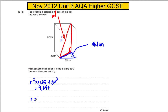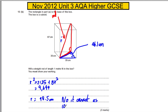The length of the rod is the square root of 9694, and we get 98.5 centimetres. Can a rod of 1 metre fit there? Therefore, a rod of 1 metre — no, it cannot — as 100 centimetres will not fit. And it's as simple as that.